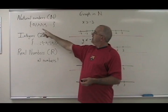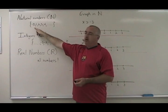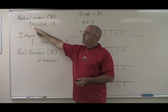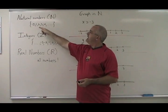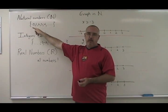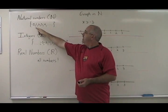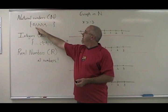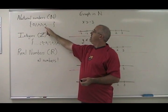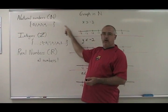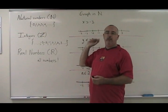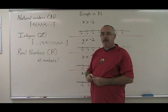Natural numbers are all of the whole positive numbers and zero. So this set describes all natural numbers: zero, one, two, three, four, and it goes on and on in a positive direction.